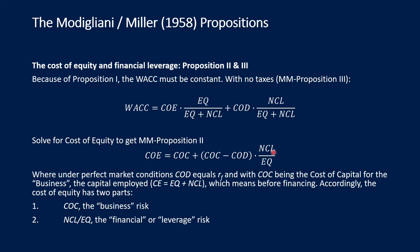Under perfect market conditions, the cost of debt equals the risk-free rate. The cost of capital (COC) is the cost for the business before financing — for all investors. Accordingly, the cost of equity has two components: the business risk inherited in the cost of capital, and the financial or leverage risk inherited in the leverage ratio. This is Proposition Two.